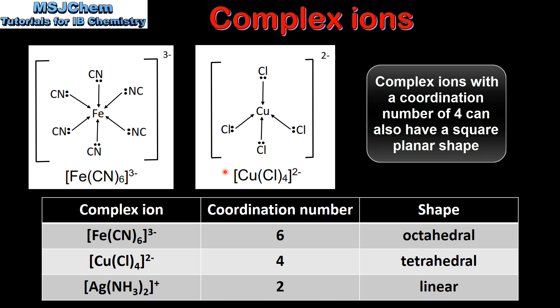The second example has 4 ligands bonded to the central metal ion, therefore has a coordination number of 4, and the shape is tetrahedral.